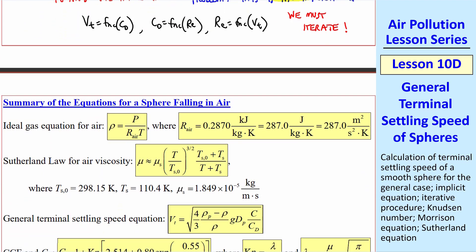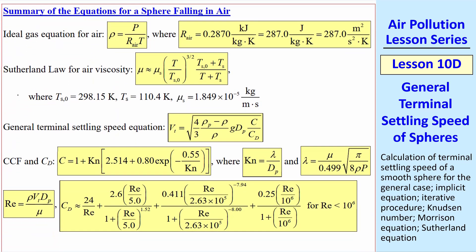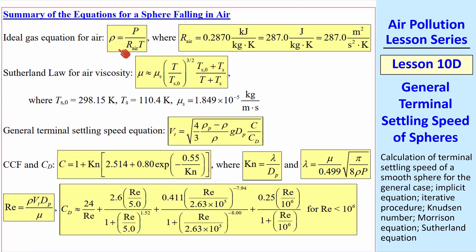Before I show the procedure for iterating, here's a summary of all the equations for a sphere falling in air. The ideal gas law, where this is R for air in various units. The Sutherland law for air viscosity, which is shown here with these constants.